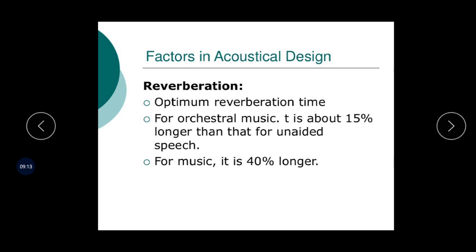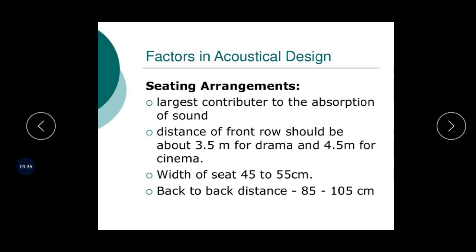Next: reverberation. We have already covered this point. For orchestral music, reverberation is about 50% longer than that of unrated speech — means normal speech. For music it is 40% longer. So reverberation time is required accordingly. This is about seating arrangement. Width of seat 45 to 55 cm, back-to-back distance 85 to 105 cm. In case higher absorption is required, we can increase the width of seat up to 105 cm.